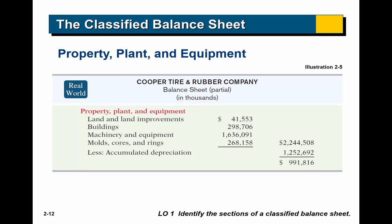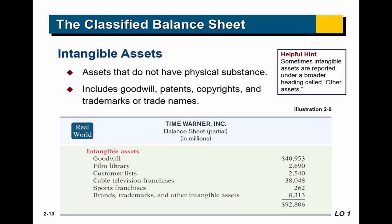In the property, plant, and equipment section you can see all the assets listed, and then there's a line that says 'less accumulated depreciation.' That accumulated depreciation represents the value we have depreciated or expensed off as we've held and used the asset. Finally, intangible assets are assets that have no physical substance — things like patents, trademarks, and goodwill. There's a list of Time Warner Inc.'s intangible assets as an example.